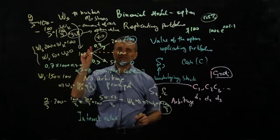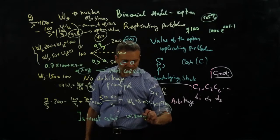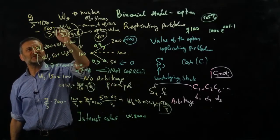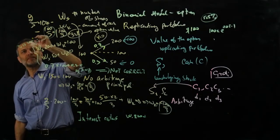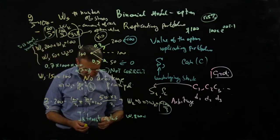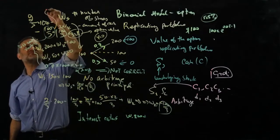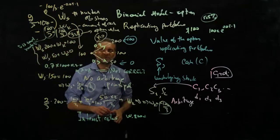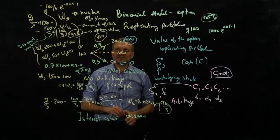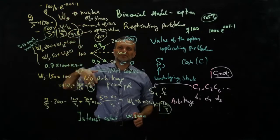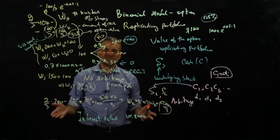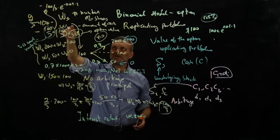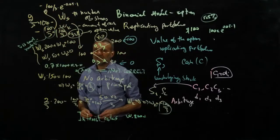What if you have non-zero interest rates? The only thing that changes is that when you calculate the price of the option, you need to discount the cash position back. Instead of −100/3, you replace it with −100/3 × e^(−0.05 × T), where T is the time frame of the option in years. If the option matures in half a year, you use T = 0.5. The risk-free rate is always annualized, so make sure to scale by the appropriate fraction of a year.